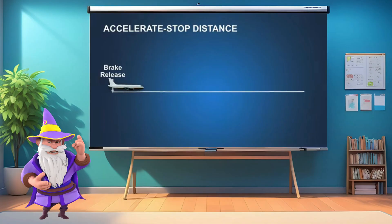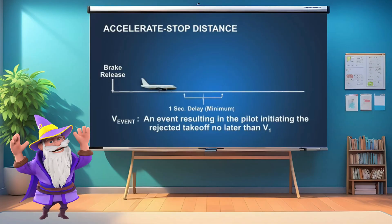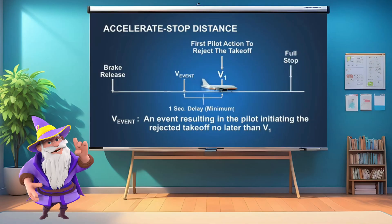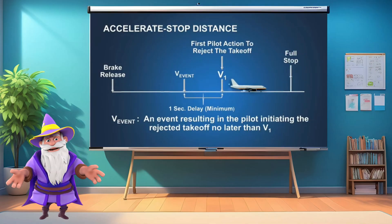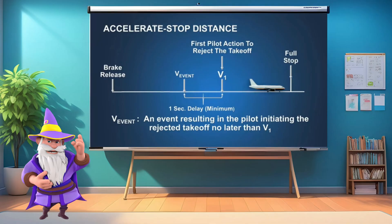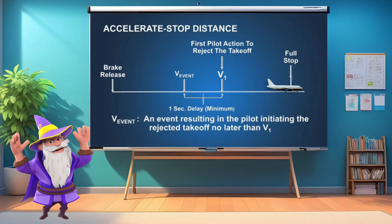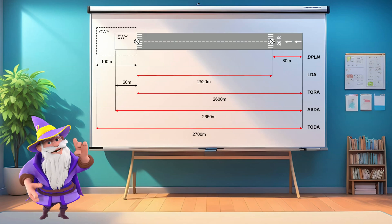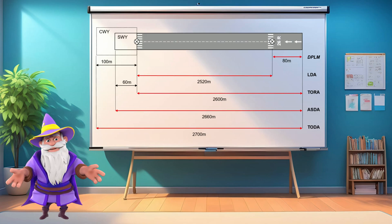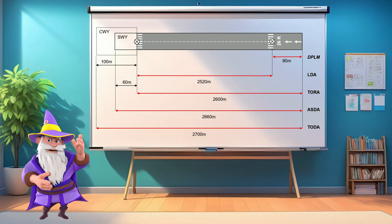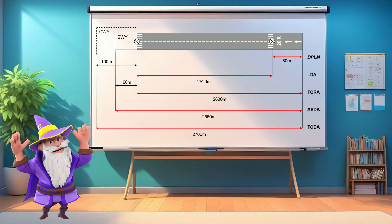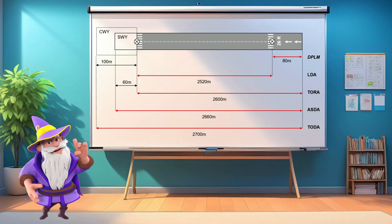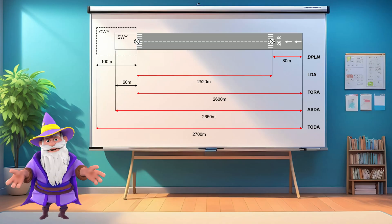V1 speed is used as the decision speed, which represents the speed at which a pilot must either choose to continue the takeoff or abort in the event of a critical situation. The takeoff decision speed V1, and the distances to achieve or decelerate from V1, are established by the manufacturer and confirmed during certification testing for varying climatological conditions, operating weights, aircraft configuration, etc.